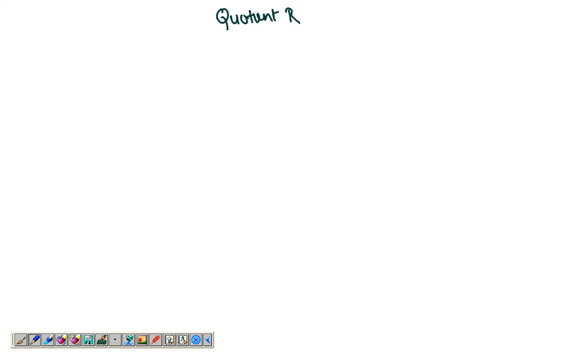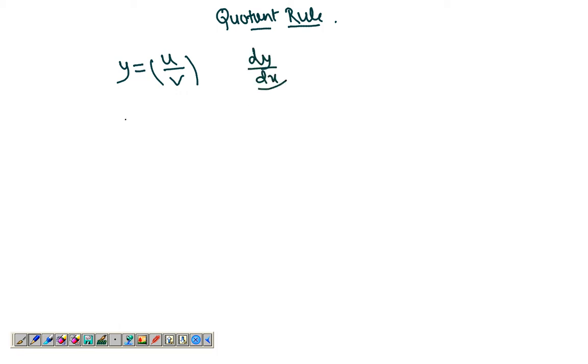We'll take up the quotient rule now. So let's say we have a function which is the quotient of two functions and we want to find dy by dx. Let's say I have x over sin x.